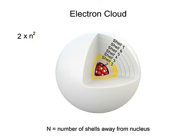For the second shell, it would be 2 times 2 squared, or 2 times 4, to give 8 electrons.